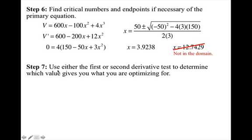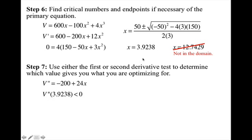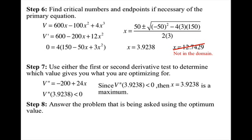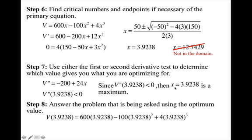Now I use either the first or second derivative test to determine which value gives what I'm optimizing for. I'm using the second derivative test because it's a polynomial and easy to differentiate. I plug the x value into the second derivative and get a value less than zero, which tells me it produces a maximum. I then find the maximum volume by plugging in this x value — making sure to store the exact value in the calculator and not use the rounded value. The maximum volume is 1056.3059 inches cubed.